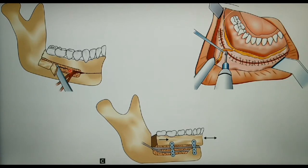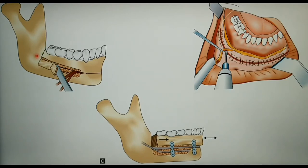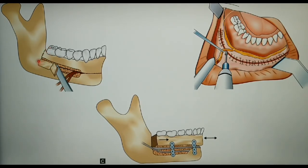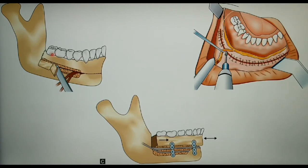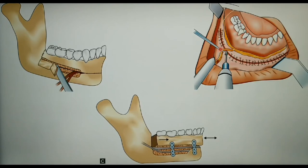The osteotomy is started just behind the most posterior tooth present. If it is the second molar, an osteotomy cut is made just posterior to it using a reciprocating or oscillating saw. The cut is continued through the window towards the midline. All this while the nerve is preserved, as shown in the diagram, with the nerve kept at a safe position using a nerve hook.